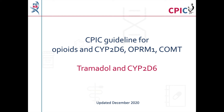This is a summary of the CPIC guideline for opioids and variation in the genes CYP2D6, OPRM1, and COMT. This video will specifically discuss the recommendations for tramadol and CYP2D6. Videos discussing the recommendations for codeine and hydrocodone can be found on the PharmGKB website and on the PharmGKB YouTube channel. This guideline was last updated in December 2020.